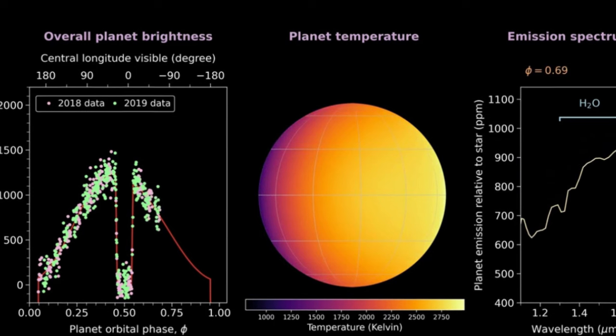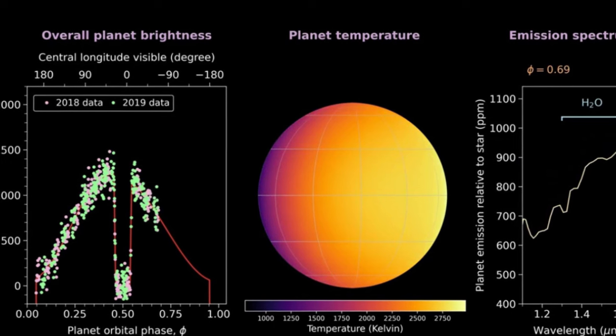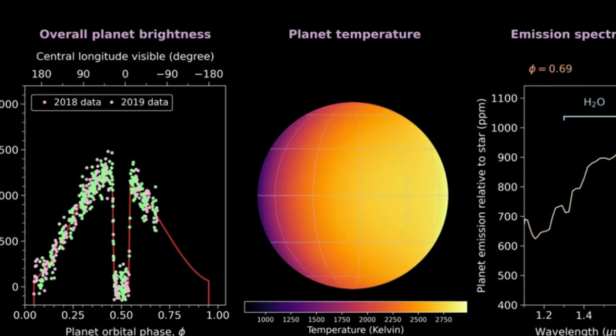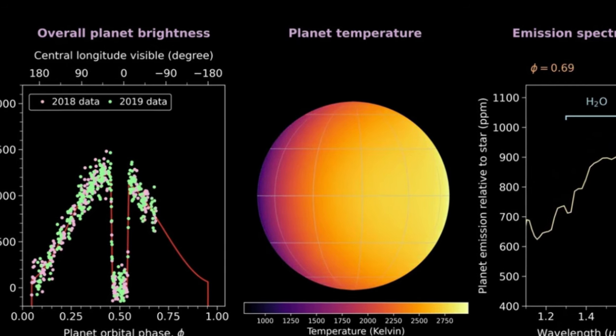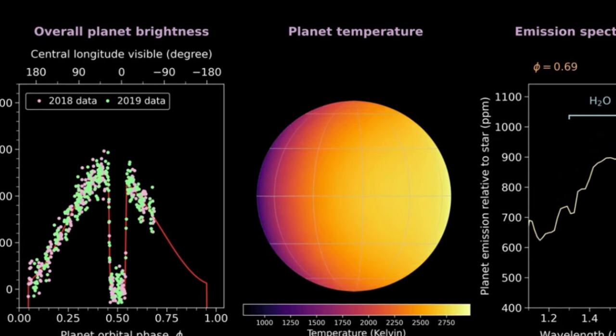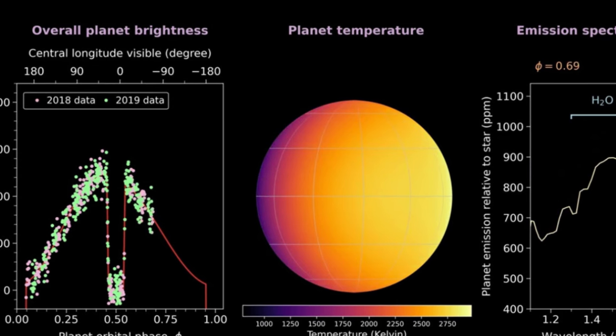But the water wouldn't condense into clouds. Instead, the team's research shows that night side temperatures are low enough that clouds could form from metals previously detected in the atmosphere of WASP-121b.